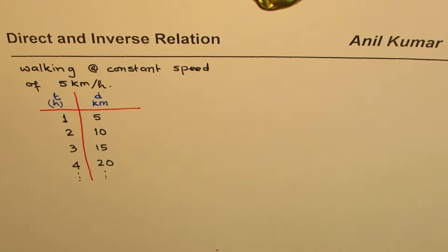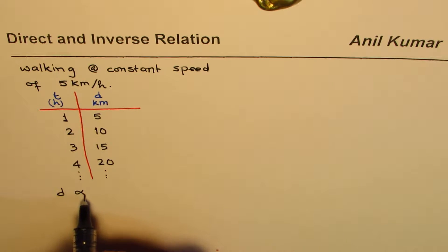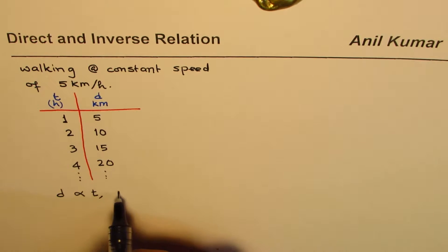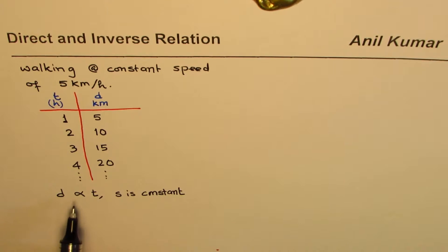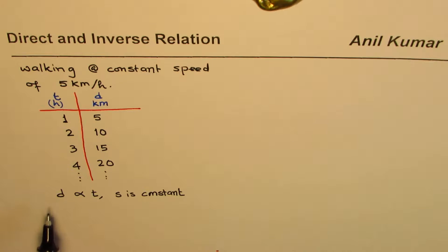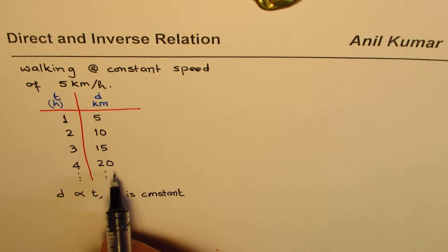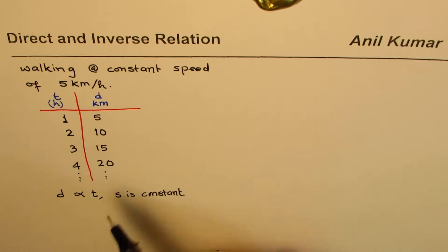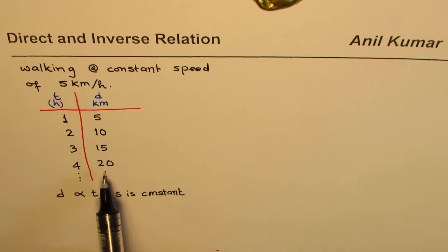The distance increases with time. What we see here is that distance is proportional to time when speed is constant. This is the symbol for proportional to. As time increases, distance increases — so we say distance is proportional to time, which means it's a direct relation. As time increases, distance also increases. And as time decreases — for example in four hours I've covered 20 kilometers, but in two hours I would have covered only 10 kilometers.